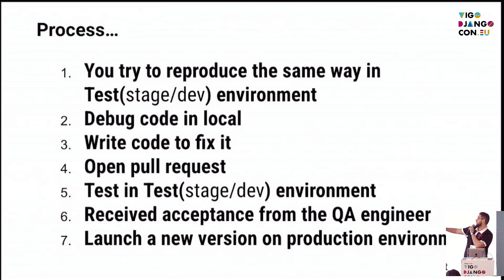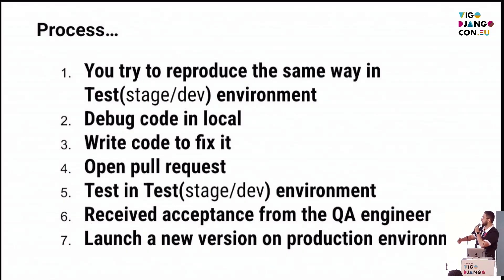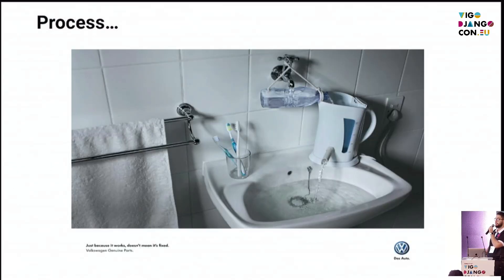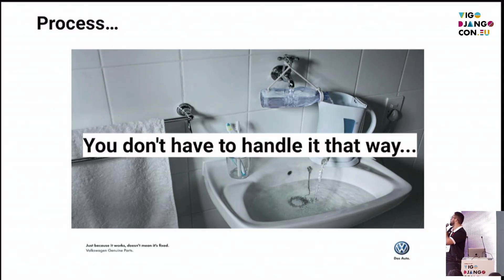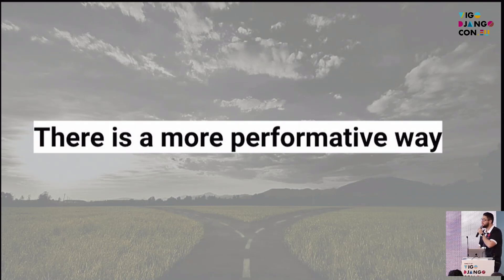In this case, it is so common to see this process. You try to reproduce the same issue in the testing environment. After this, you start debugging your code on a local machine. You find the root cause and start writing the code to fix it. You open the pull request, give your colleagues a review, test the testing environment — it is fine. You receive acceptance from the QA engineer and launch a new version in the production environment. This is a very common process. But this process — just because it is working doesn't mean it is the best approach. There is a more performant way.